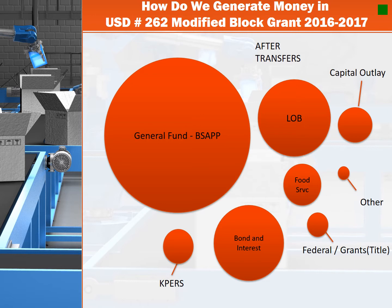The general fund funds operations as well as the educational purposes of all parts of our district, everything from transportation to classroom expenses. The LOB in our case funds technology, all utilities, and all classroom budgets. Capital outlay, to the far right, is the infrastructure and updates of technology throughout our district — so everything from roofs to parking lots.